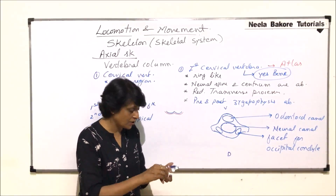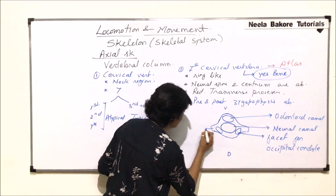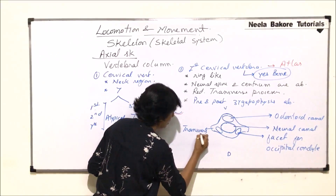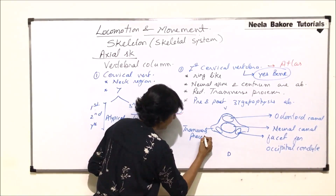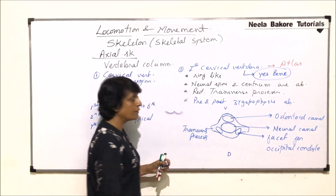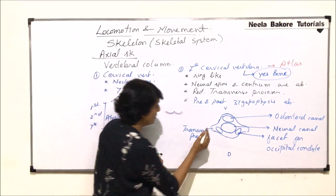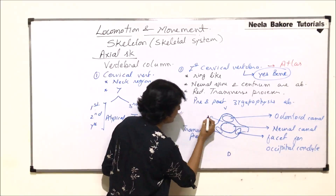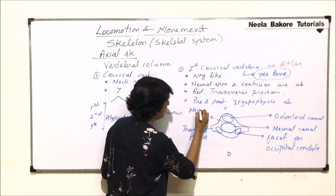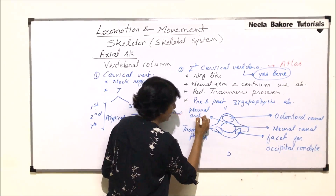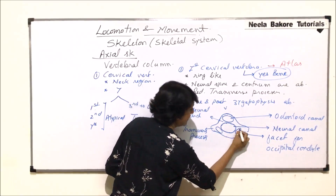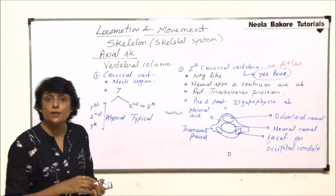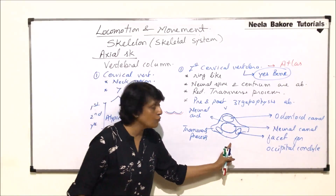Labeling the atlas: the neural spine is absent; these projections are the transverse processes. The odontoid canal is present on the ventral side, and the bony arch surrounding the neural canal is known as the neural arch. The two concave surfaces on the upper face are the facets for the occipital condyles.